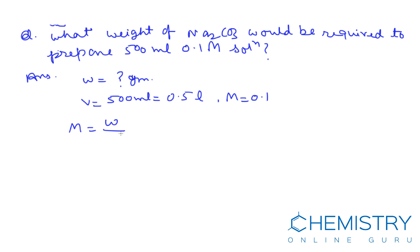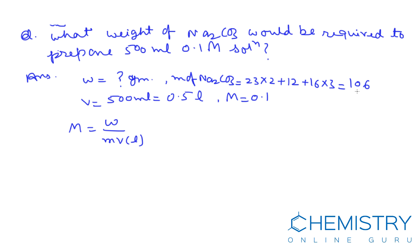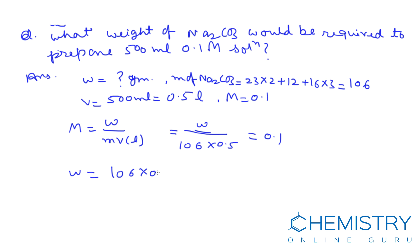The formula is M = W/(mV). The molecular weight of Na₂CO₃ is 106. Putting the values in: 0.1 = W / (106 × 0.5). Therefore, W = 106 × 0.5 × 0.1 = 5.3 grams. This is our answer.